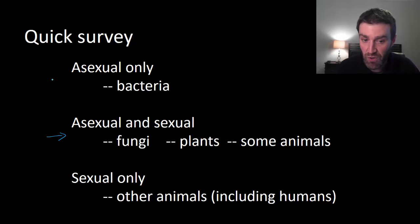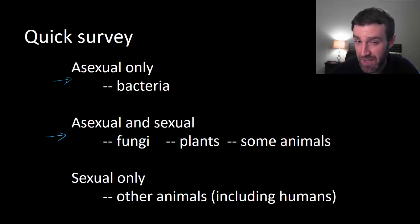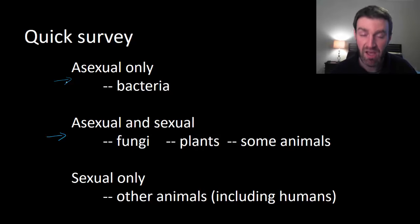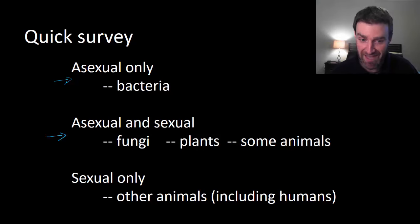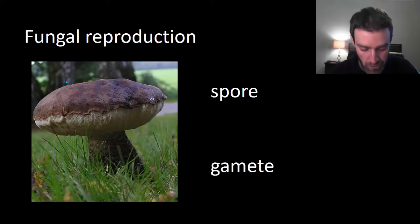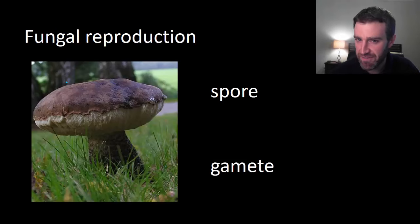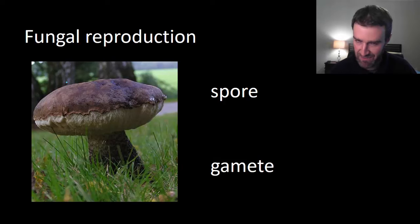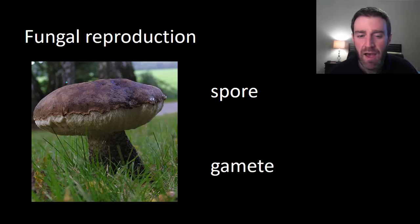Briefly, bacteria can only reproduce asexually, so they're not going to be able to generate genetic variety through reproduction, although as we'll see later they have plenty of other mechanisms to generate variety to keep pace with evolution. So let's just do a quick survey of certain fungi, plants, and animals — I just want to go quick here and talk about some basic concepts.